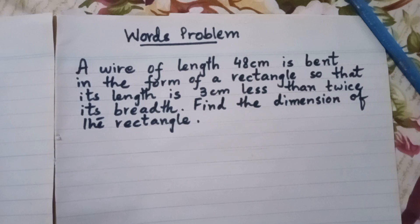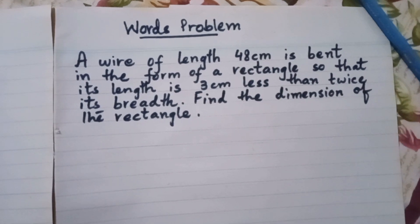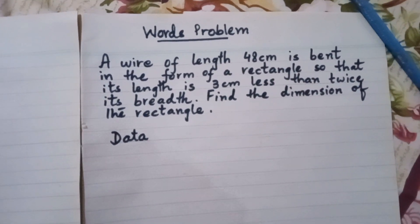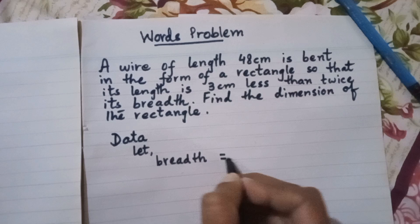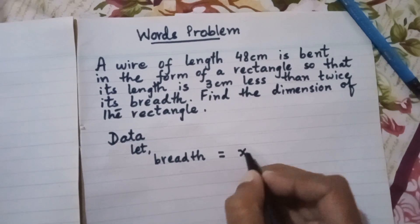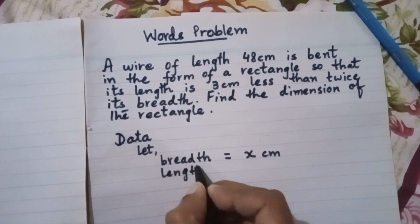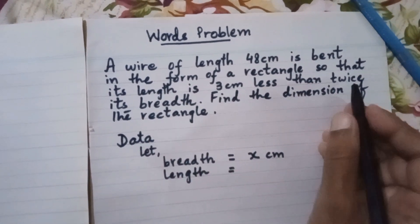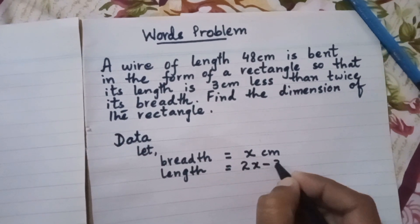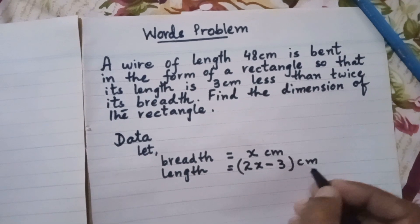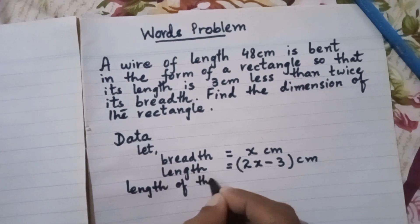Bismillahirrahmanirrahim, Assalamu Alaikum. Today's problem: a wire of length 48 centimeters is bent in the form of a rectangle so that its length is three centimeters less than twice its breadth. Find the dimensions of the rectangle. Here we suppose the breadth to be x and the length to be 2x minus 3. We have to find out the dimensions of the rectangle.